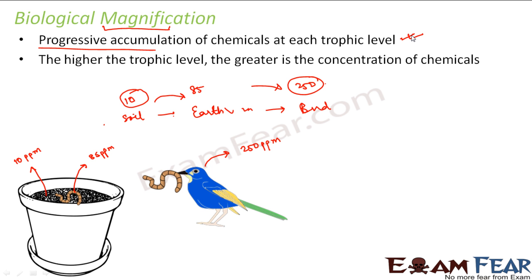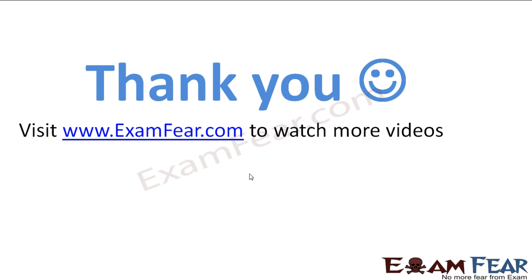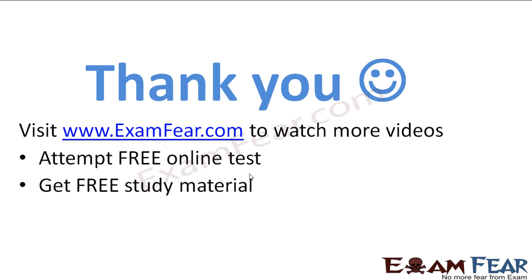So far we have covered ecosystem, the biotic and abiotic components of ecosystem, the different types of biotic components — producers, consumers, and decomposers — and the food chains of those biotic components. Please visit examfear.com to watch more videos, attempt free online tests, get free study material, and find tutors and mentors. Thank you.